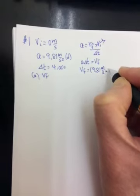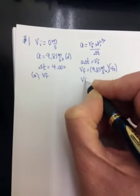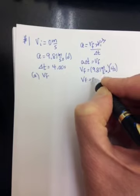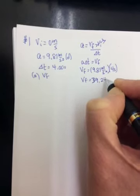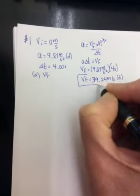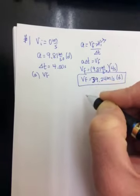So 9.81 meters per second squared times 4 seconds. VF equals 39.24 meters per second, and that will be down. Because it works out to be positive, and we called down positive. So that's part A.